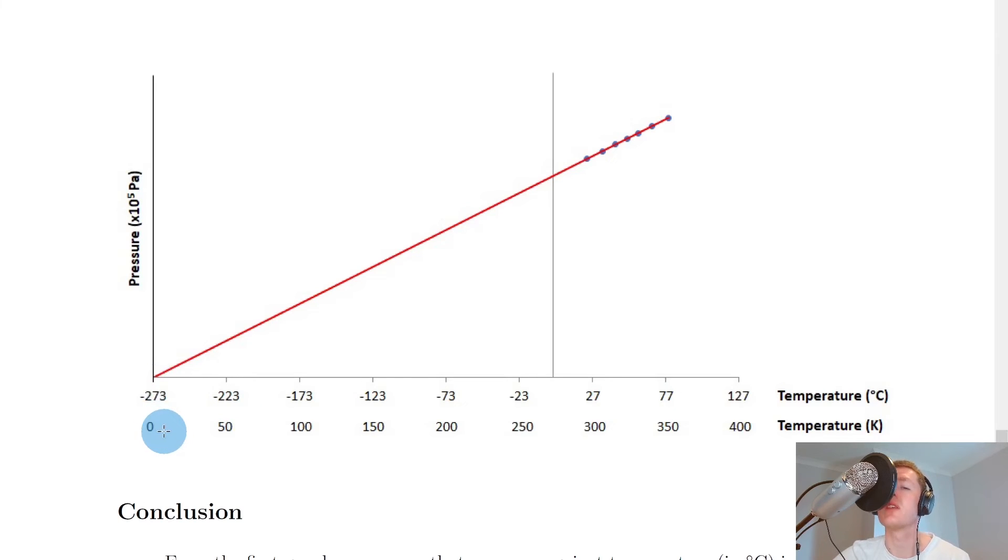So that's the same as 0 Kelvin. So this means that if I now insert my temperature scale in terms of Kelvin below the one for degrees Celsius you can see now that I have a straight line that passes through the origin if I consider the temperature to be in Kelvin rather than degrees Celsius. And this gives us an important result.